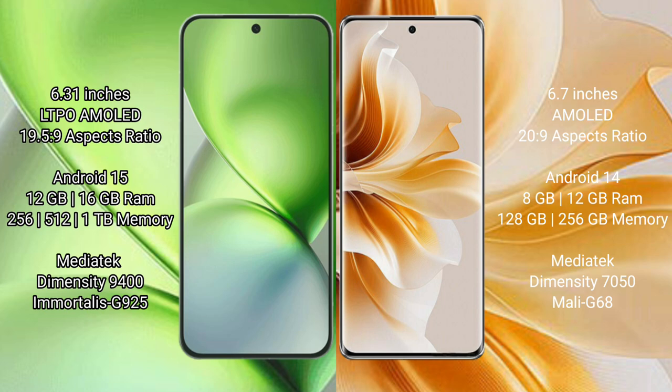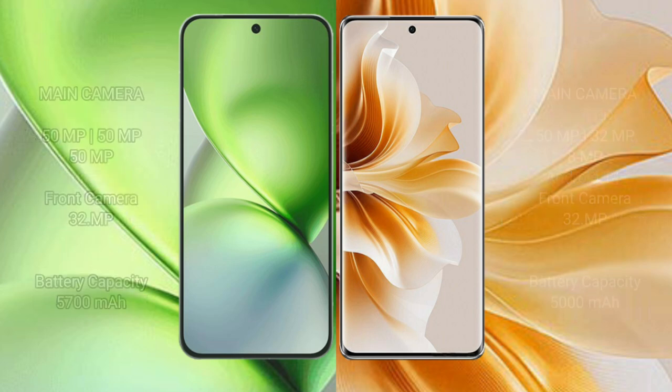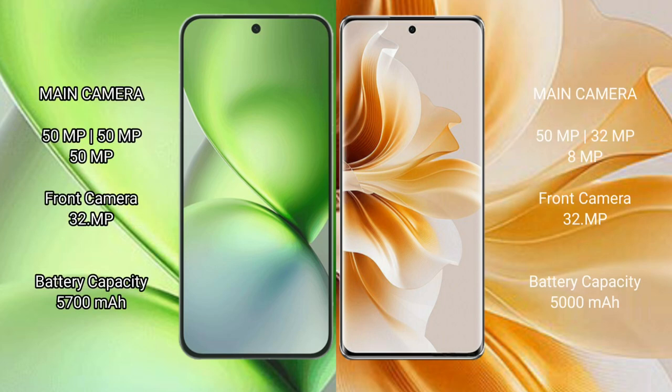The Vivo X200 Pro Mini features a MediaTek Dimensity 9400 processor with a GPU 925. The Oppo Reno 11 comes with 8GB or 12GB RAM and 256GB or 512GB internal storage, a MediaTek Dimensity 7050 processor, and a GPU model of 68. The Vivo X200 Pro Mini has a triple rear camera setup.